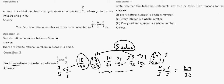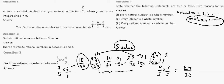Question 4: state whether the following statements are true or false. First: every natural number is a whole number. Natural numbers start from 1, 2, 3, and so on. Whole numbers start from 0, 1, 2, and so on. Since whole numbers include all natural numbers, every natural number is a whole number — this statement is TRUE.